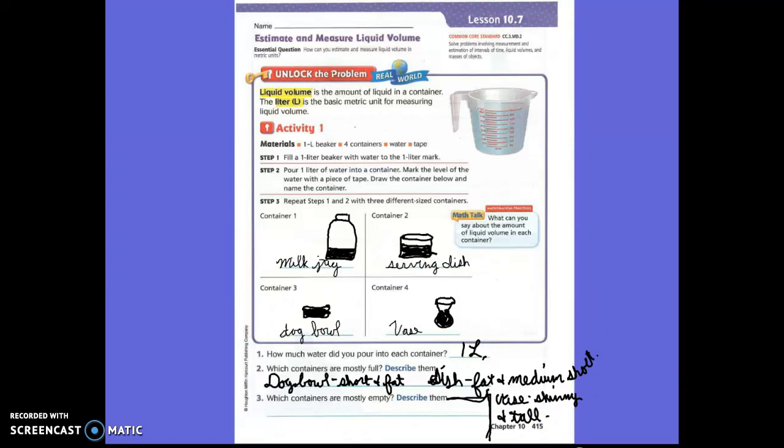We need to write on number three. Which containers are mostly empty? We only have one that's mostly empty. What's mostly empty? Milk jug. Milk jug. The milk jug. Right? Milk jug. And how would you describe it? It's tall and fat. Tall and fat. All right. When you have that, turn it to the next page.